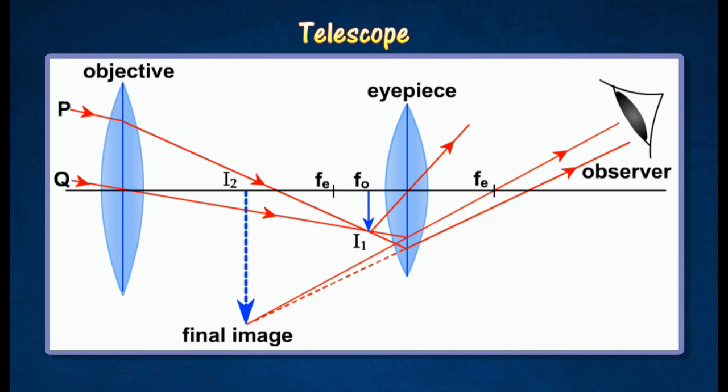The objective collects parallel light rays from a distant object to form an image I1 which is real, inverted and diminished at its focal point FO.